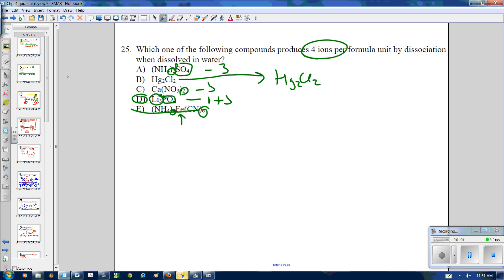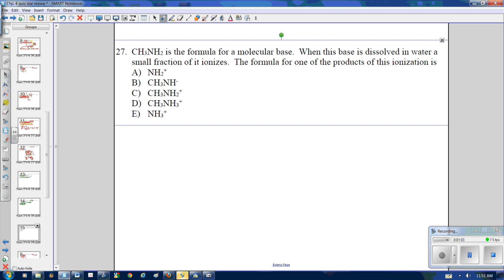Next one. They give you this base, CH3NH2. Remember, a base reacts with water, so when it ionizes, it's going to react with water. A base always takes an H from water. It's going to end up right there, creating OH- and CH3NH3+.